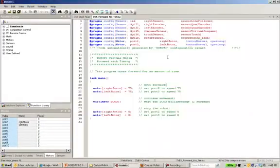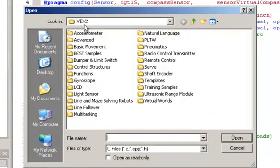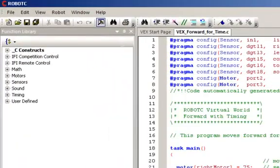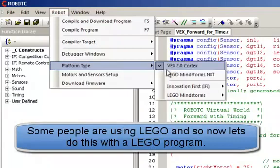We did that using the VEX Cortex. When we did that, we opened a sample program. Notice this is the VEX 2.0. We were in the virtual worlds, and we picked a program actually that I had already given you. What I want to do is I want to demonstrate that we can do that with Lego.